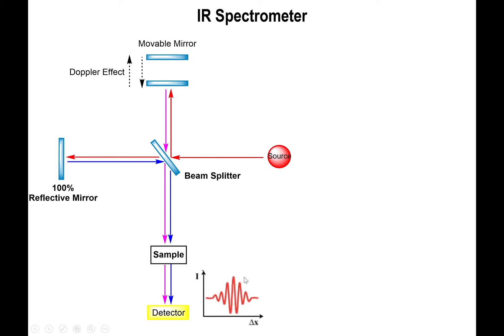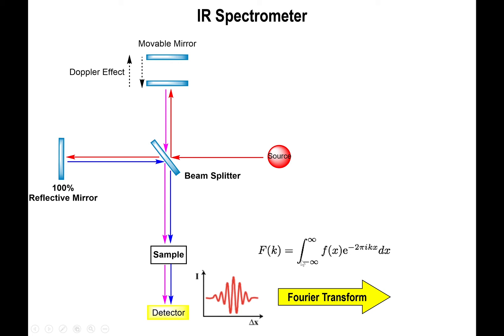This complex result, which is basically the collection of all the data collected at once and kind of looks like noise, can actually be transformed into something useful via something referred to as the Fourier transform. The Fourier transform has a mathematical basis — it's actually based on calculus. You take an integral of a function that is in some type of domain; in this case it would be the distance domain, because you're looking at the change in position of the mirror generating this type of frequency. You then change it from the distance domain to the frequency domain or energy domain, and here's where you actually get your spectrum.